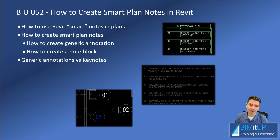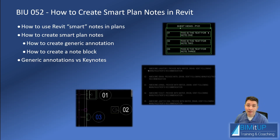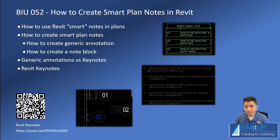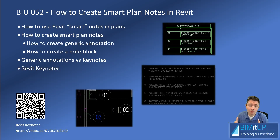So say you want to put out a bid set really quick and you just want to place a note that says 'provide a laboratory, please price it,' but you don't have the element visible - you cannot use keynotes. They're extremely powerful but you need to make sure you know how to use them well. I'll leave a link in the video description so you can compare both methods - Revit keynotes versus generic annotations - and decide for yourself, or even do a combination of both depending on your needs.